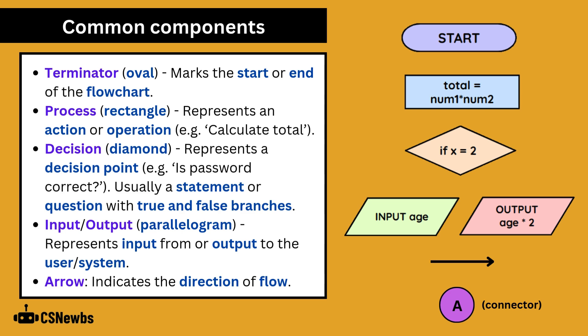Input and output are represented by parallelograms. Arrows indicate the direction of flow, and you can also use circles, which are connectors, to avoid crossing lines or continue onto another page.